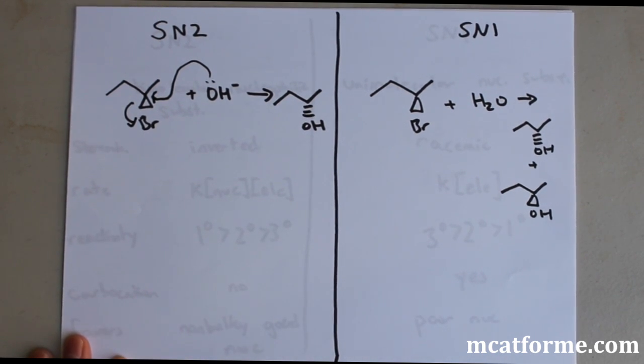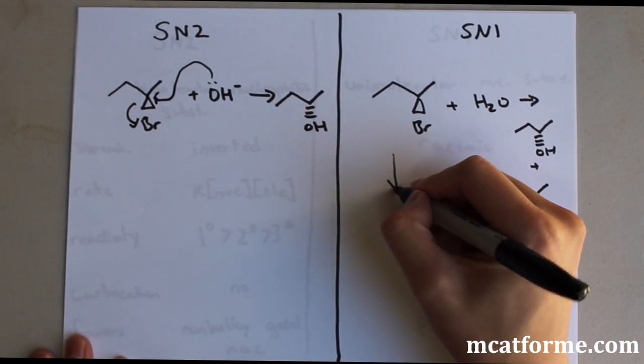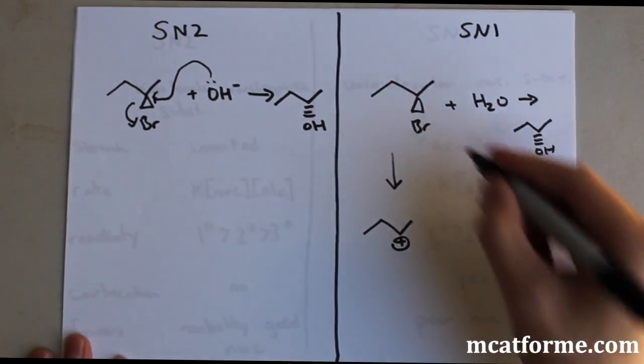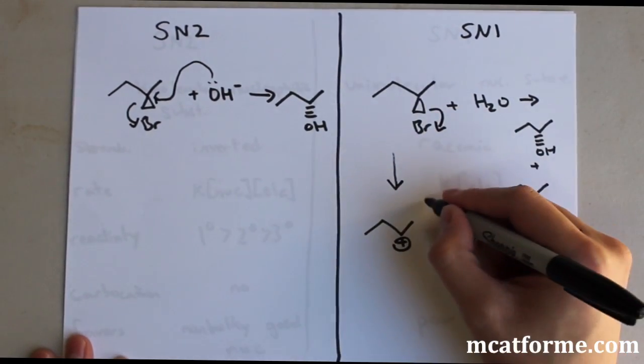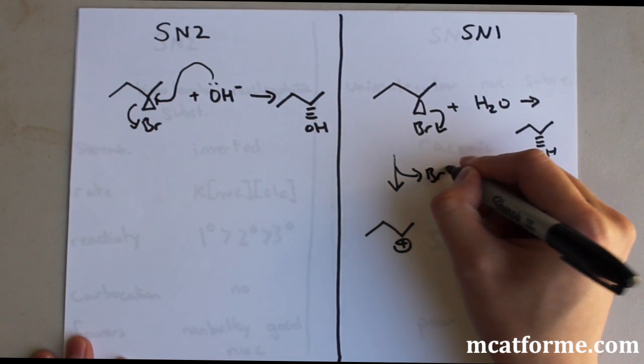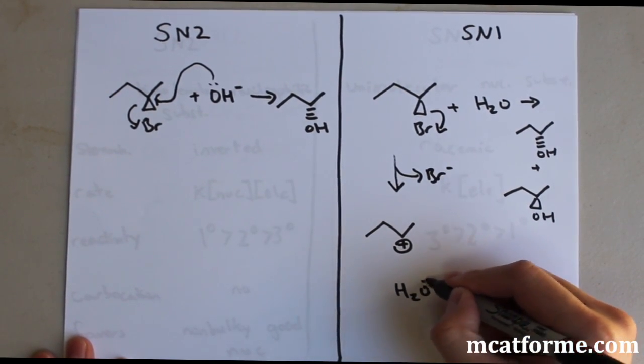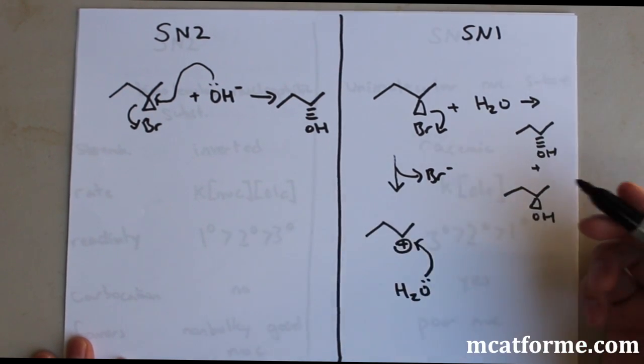Now SN1, what happens there? The first step in SN1 is we're going to form a carbocation. This Br is going to leave, so we'll get this Br- right there. And what's going to happen is this H2O is going to react now. But notice, this is a carbocation. It's SP2.